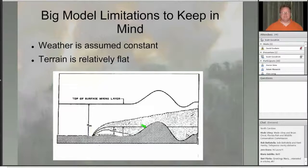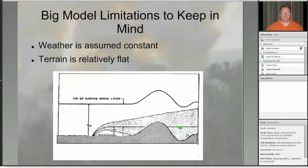The other problem in complex terrain is that terrain can actually steer how the plume moves — this is not accounted for in vSmoke. These two big limitations — constant weather and flat terrain — may at first look like they really limit what you can do with the model. But as shown with the case study, you can make use of this tool even when breaking these assumptions, as long as you're aware that these problems could occur.